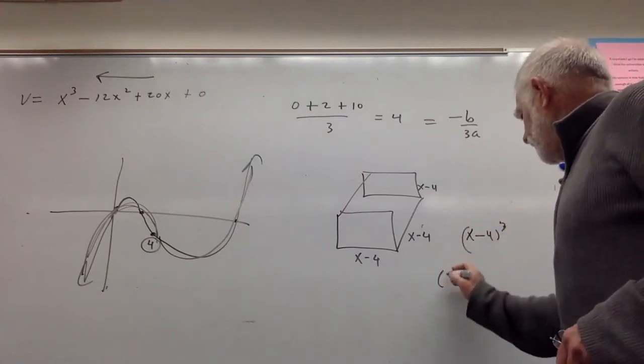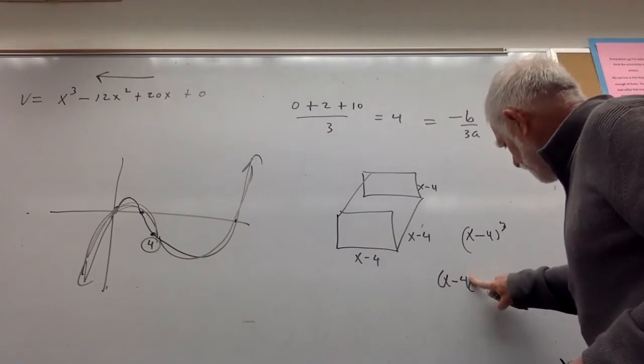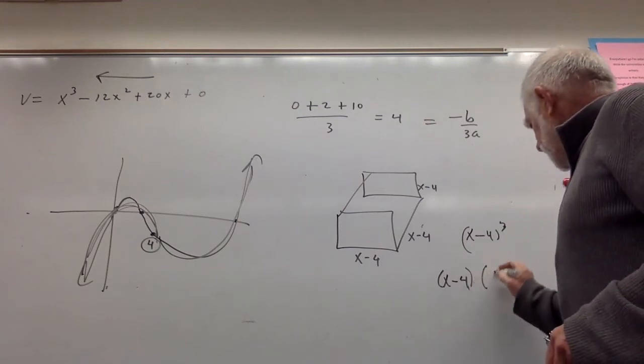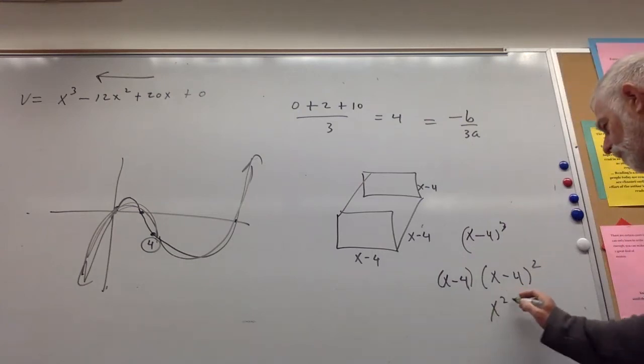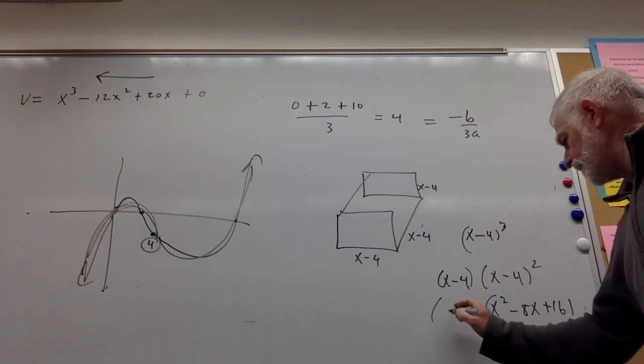I like to do (x - 4) times (x - 4)². I really push this in my class, binomial squaring. So x² - 8x + 16, and then we got x - 4.